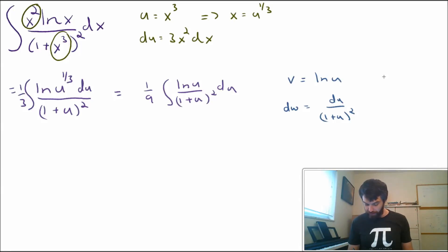So if v is the natural log of u, then dv is going to be equal to 1 over u du. And if dw is du over 1 plus u squared, then my w is going to be equal to minus 1 plus u to the minus 1. Taking that derivative would introduce another minus sign, so I need to put a minus.